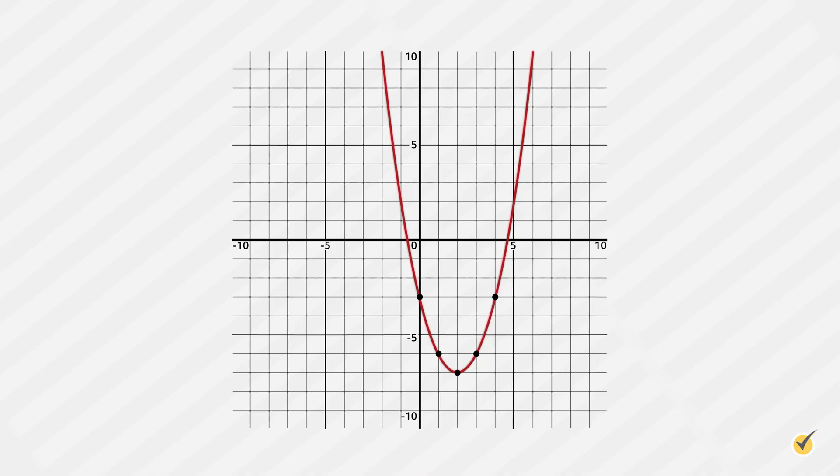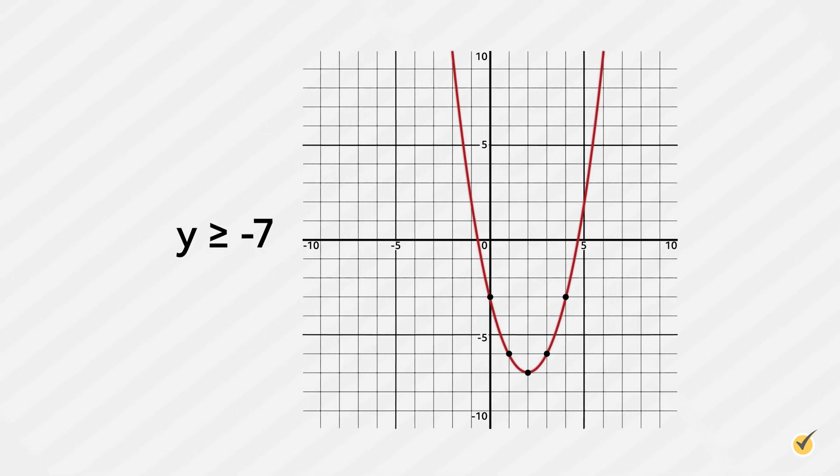What about our range? Let's figure this out by looking at a graph of the equation. Remember, our range is every possible value for y. If we look at our graph, we see that it is a parabola that opens up with a vertex at 2, negative 7. This means that our range is y is greater than or equal to negative 7.